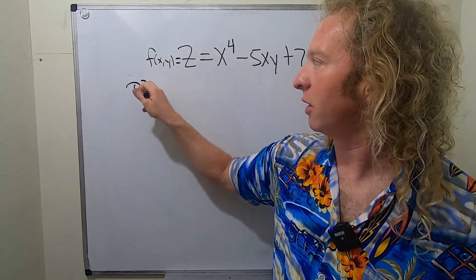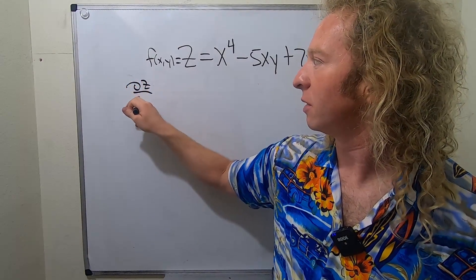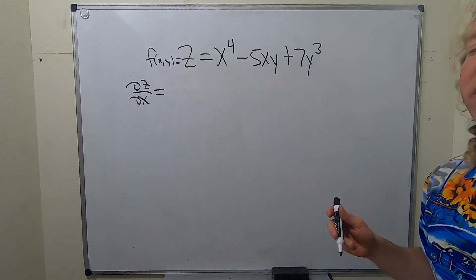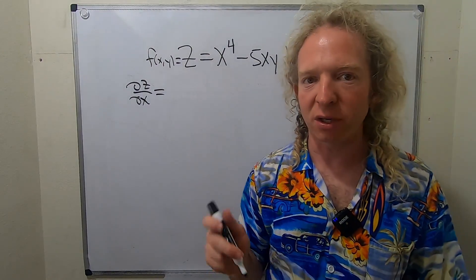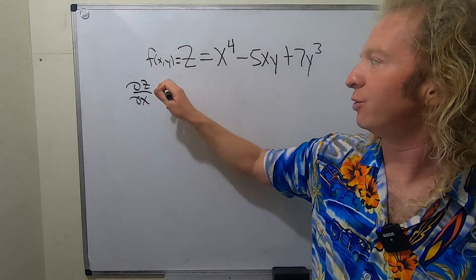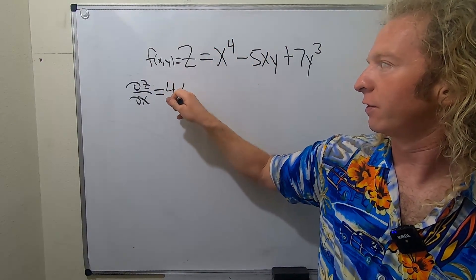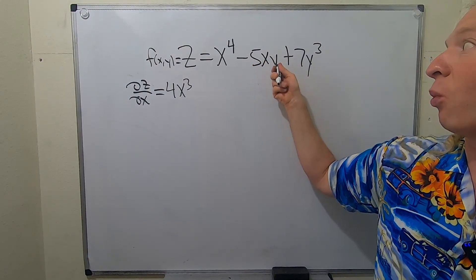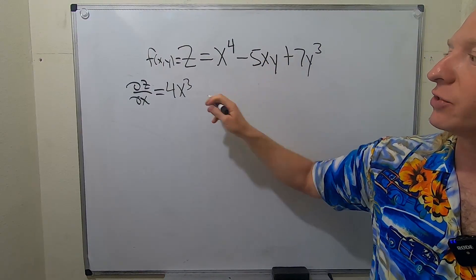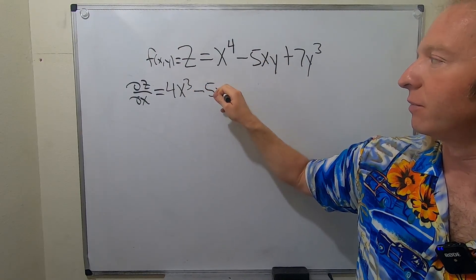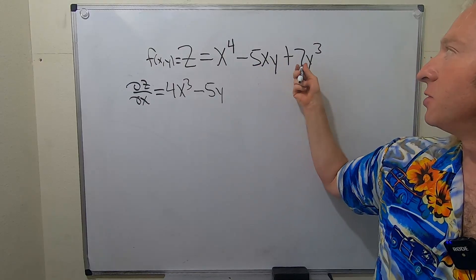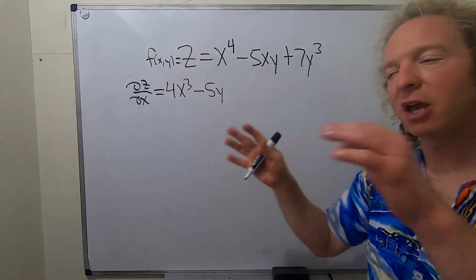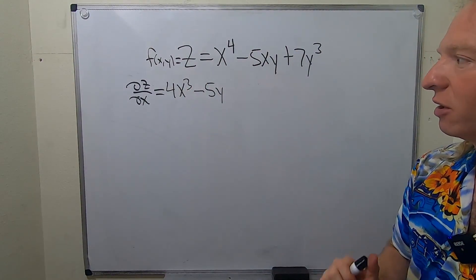Let's do del z del x. So del z del x is the partial derivative with respect to x, so all of the y's are constants. It'll be 4x cubed. And then here, this derivative is 1, and the y and the 5 are constants, so it's minus 5y. And this derivative is 0 because we're taking the partial derivative with respect to x and all of the y's are constants.